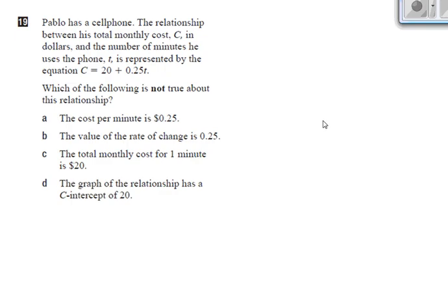So here we are, we're on to question 19. It says Pablo has a cell phone. The relationship between his monthly cost, C in dollars, and the number of minutes he uses the phone, t, is represented by the equation C equals 20 plus 0.25t. So certainly, at this point, you should be really familiar with the fact that 20 is a starting value or a flat fee.